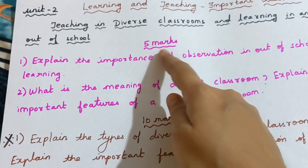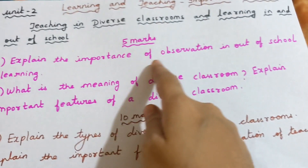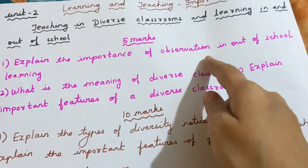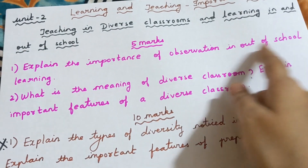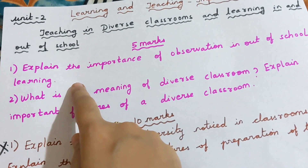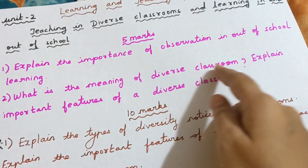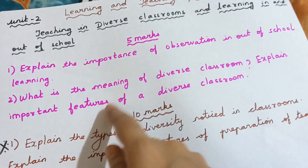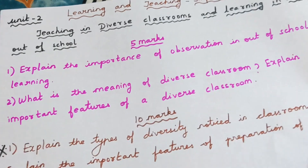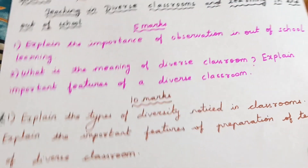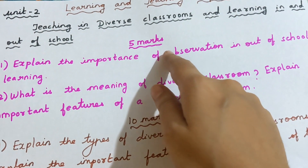First, let's see the important questions for 5 marks. First question: explain the importance of observation in out of school learning. Second question: what is the meaning of Diverse Classroom? Explain the important features of Diverse Classroom. These two questions might come for 5 marks.